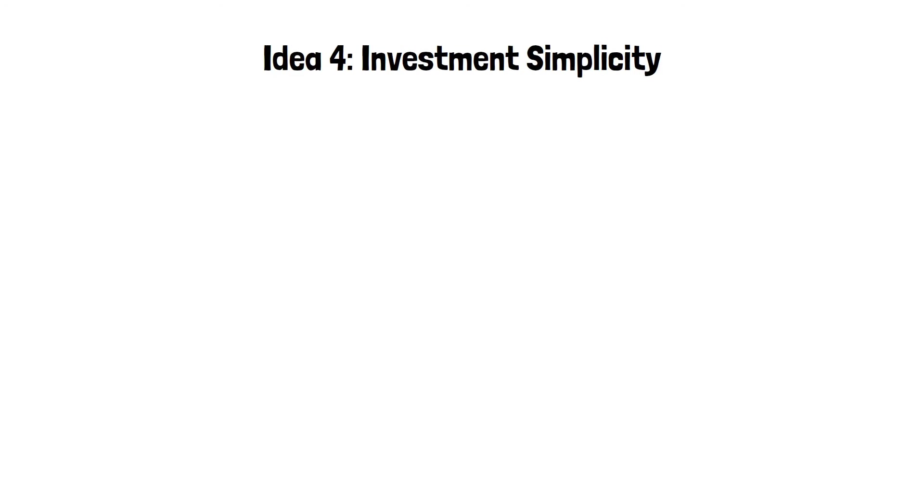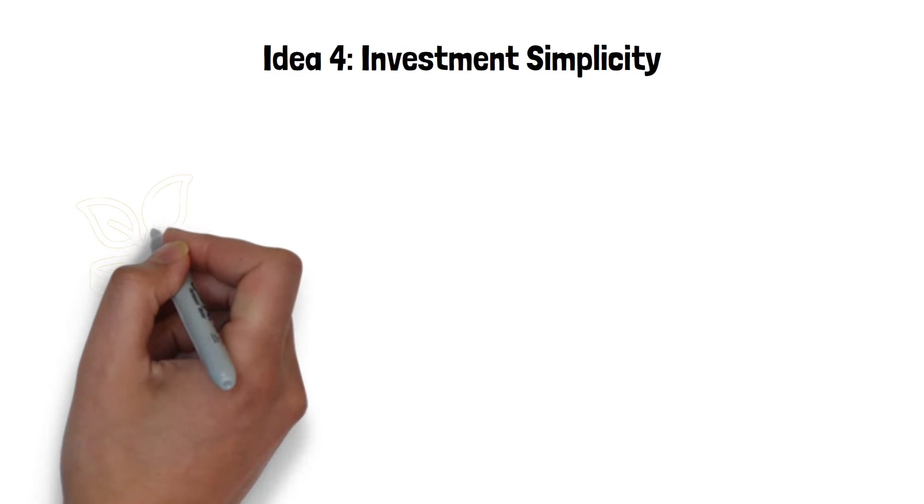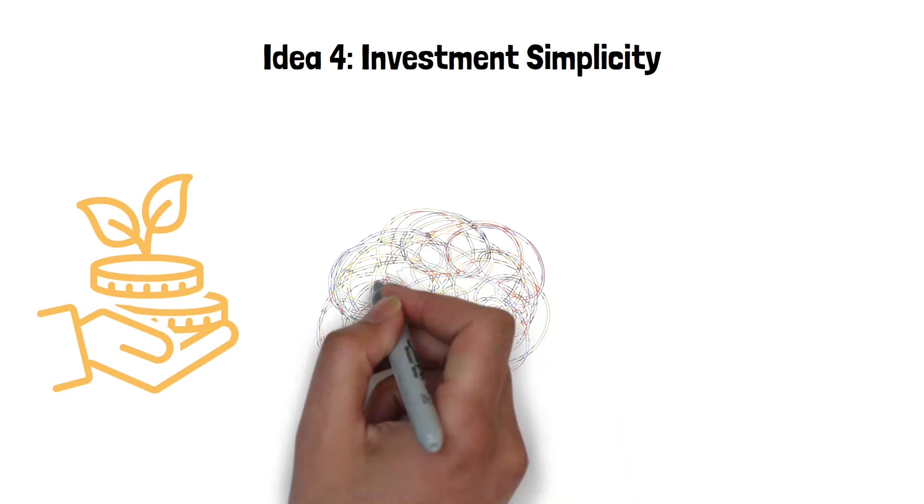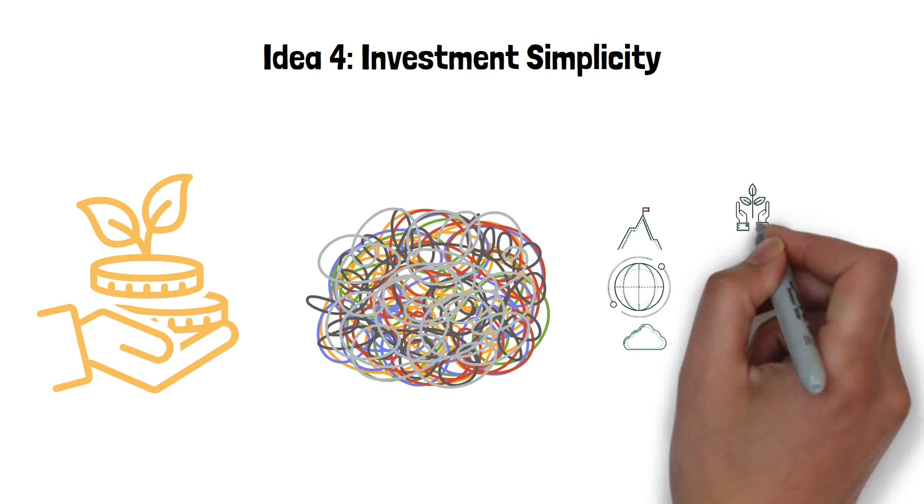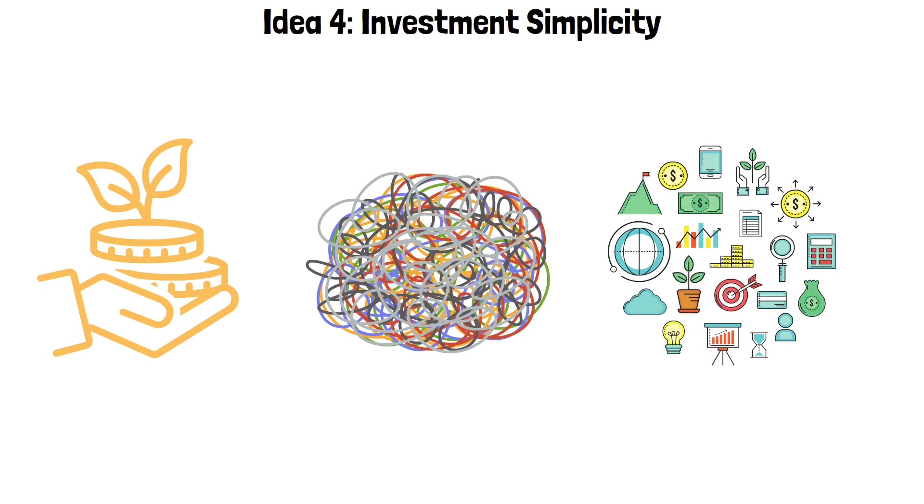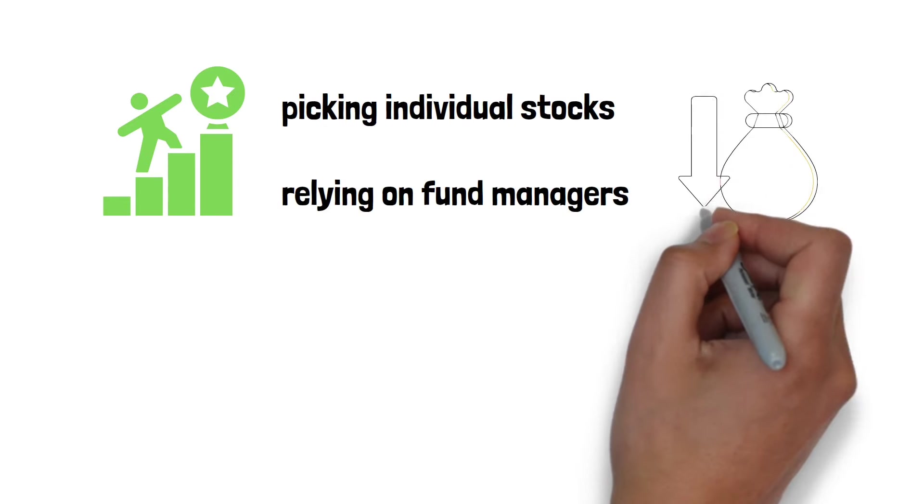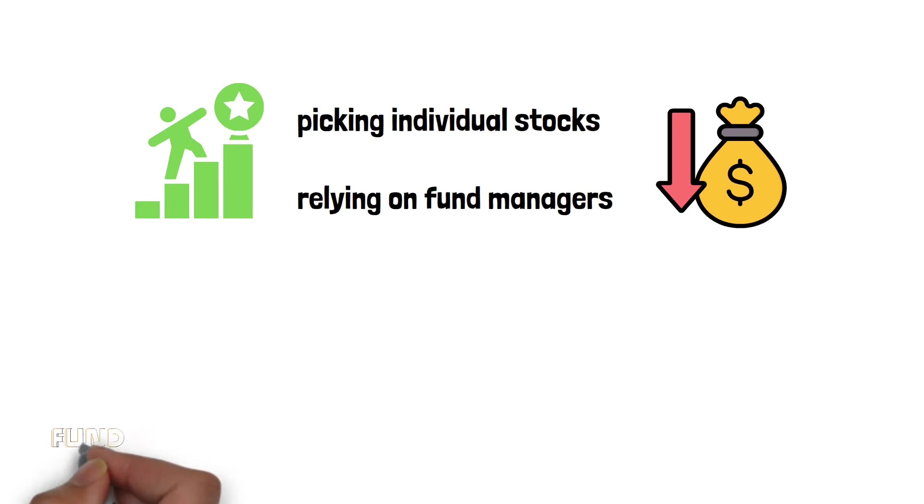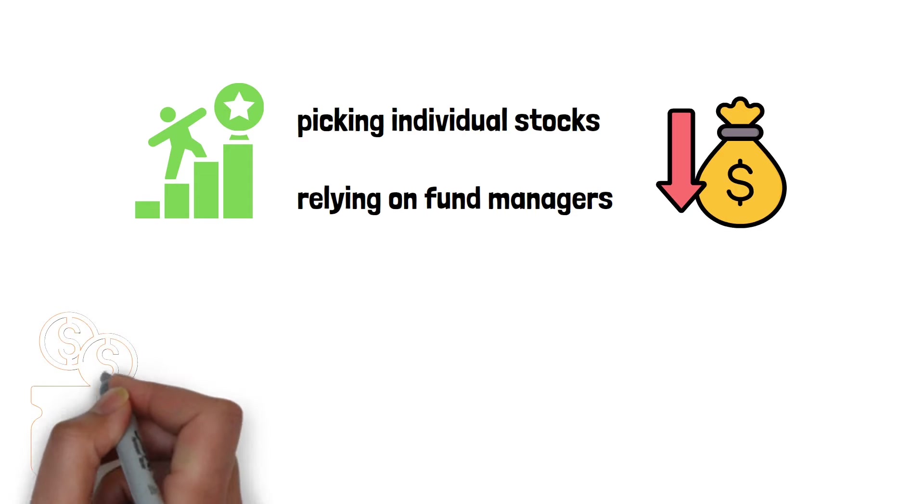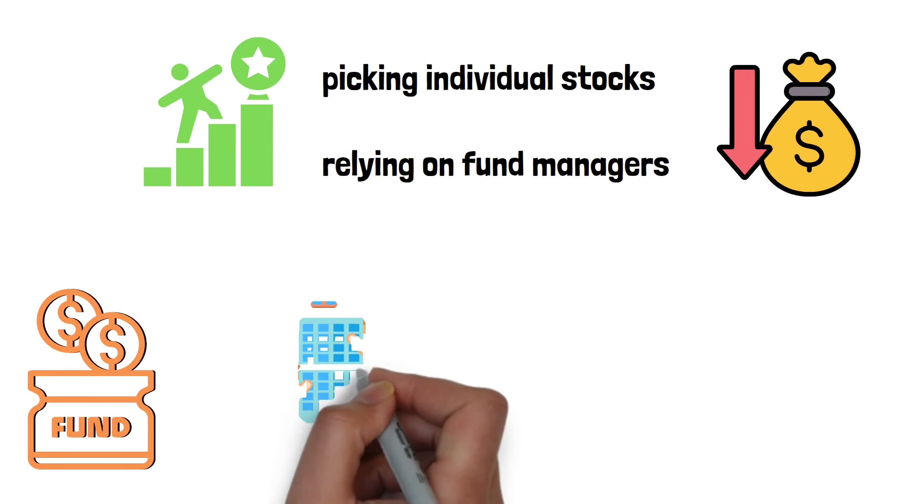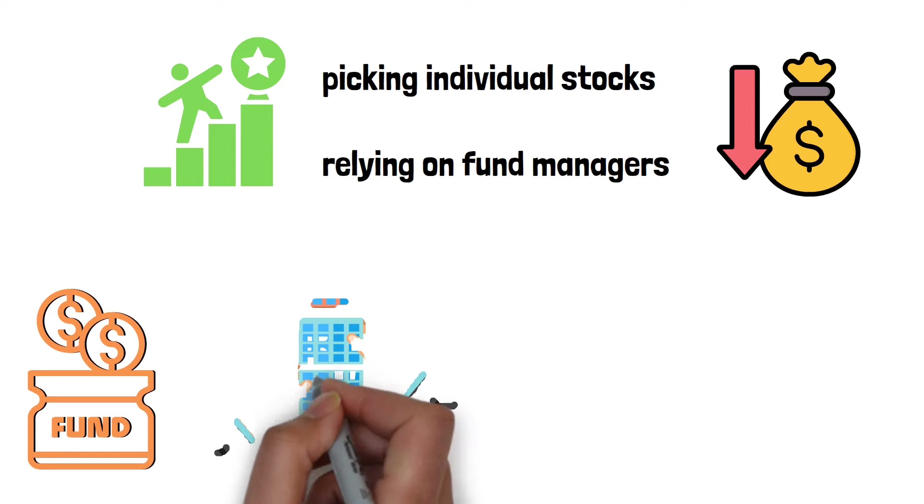Idea 4: Investment simplicity. Investment simplicity is a core principle. The basic premise is to avoid getting tangled up in complicated investment strategies. Instead of trying to beat the market by picking individual stocks, the recommendation is to invest in low-cost index funds. These funds are designed to mirror the performance of the entire stock market. By doing this, you essentially own a small piece of every company in the index, which diversifies your investment and reduces your risk.